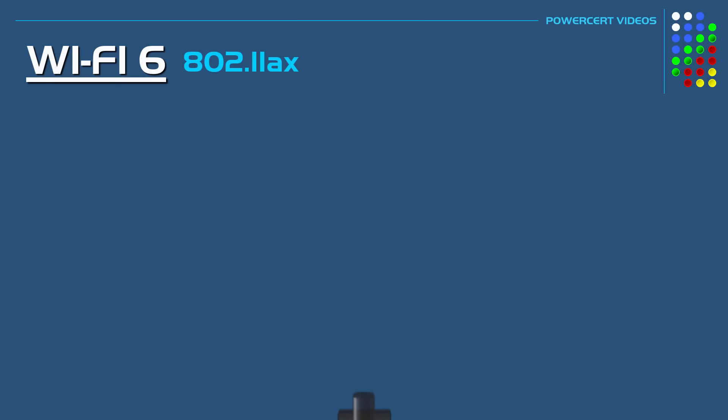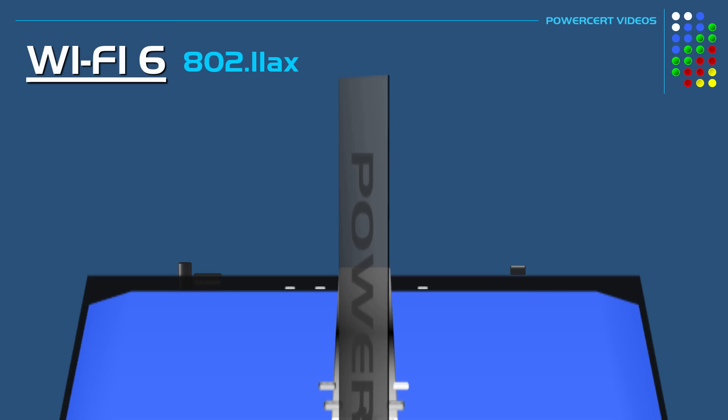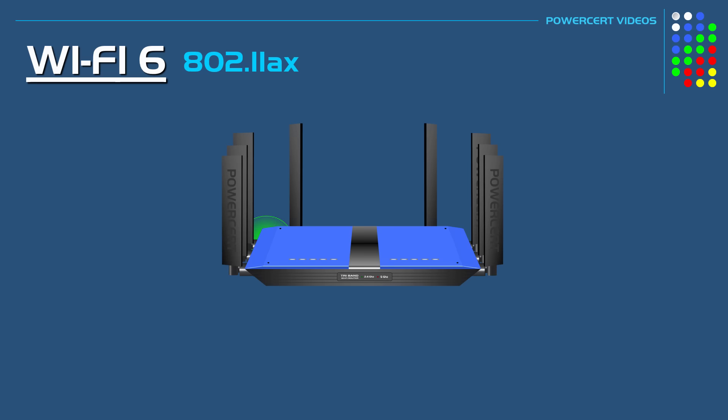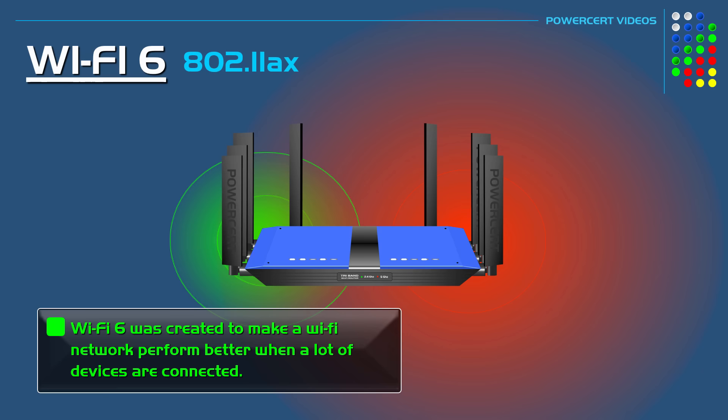Hello everyone. In this video we're going to talk about the 802.11ax wireless standard, which is more commonly known as Wi-Fi 6. Wi-Fi 6 was released in 2019 and is the latest wireless standard, and is the successor to the 802.11ac Wi-Fi standard, known as Wi-Fi 5. Wi-Fi 6 is faster than Wi-Fi 5, however speed wasn't necessarily its main goal. The main goal of Wi-Fi 6 is to make a Wi-Fi network perform better when a lot of devices are connected to it.